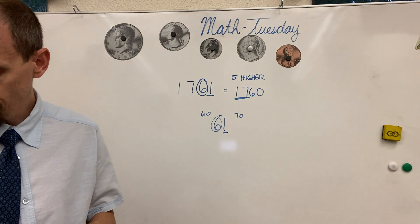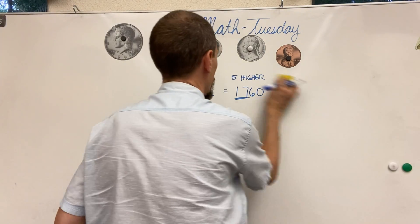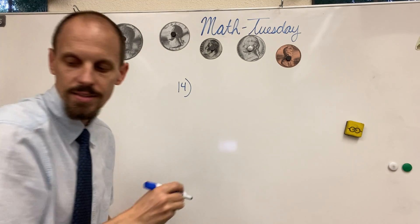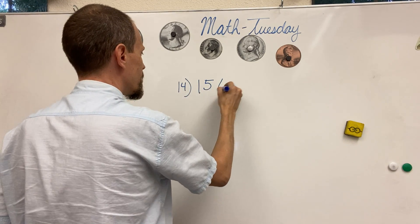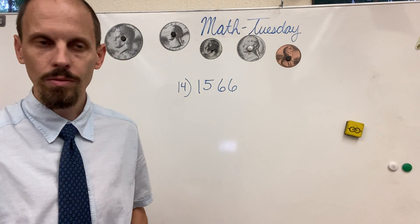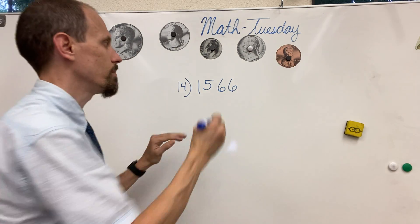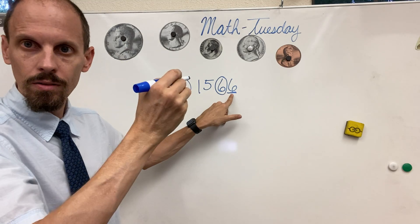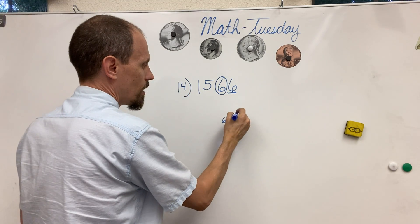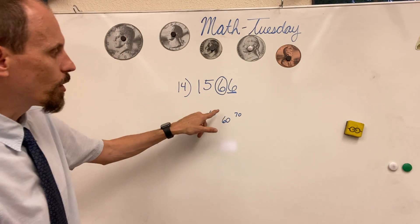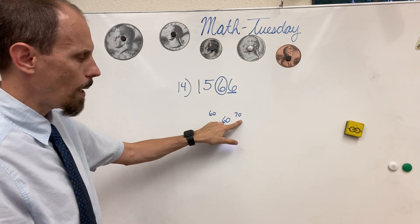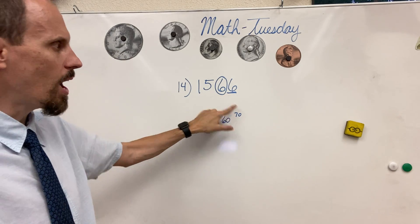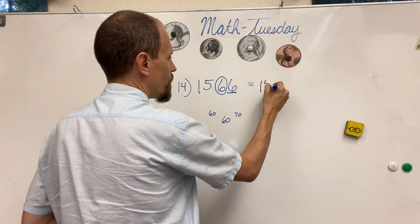Let's look at number 14. Number 14 says 1,566. We're rounding to the nearest tens. So what do we do? We find our tens place — ones, tens. Let's circle it and underline the next number. Is this number five or higher? We have our 60s again — it can round up to 70 or round down to 60. We look at the next number: is it five or higher? Yes, six is higher than five. So we're going to round up. The answer is going to be 1,570.